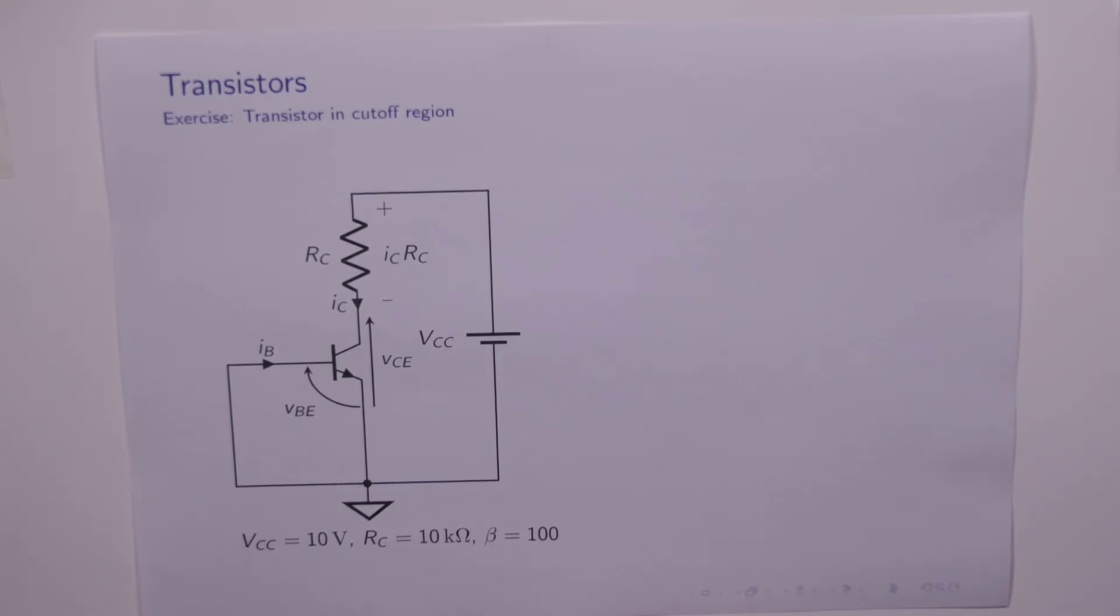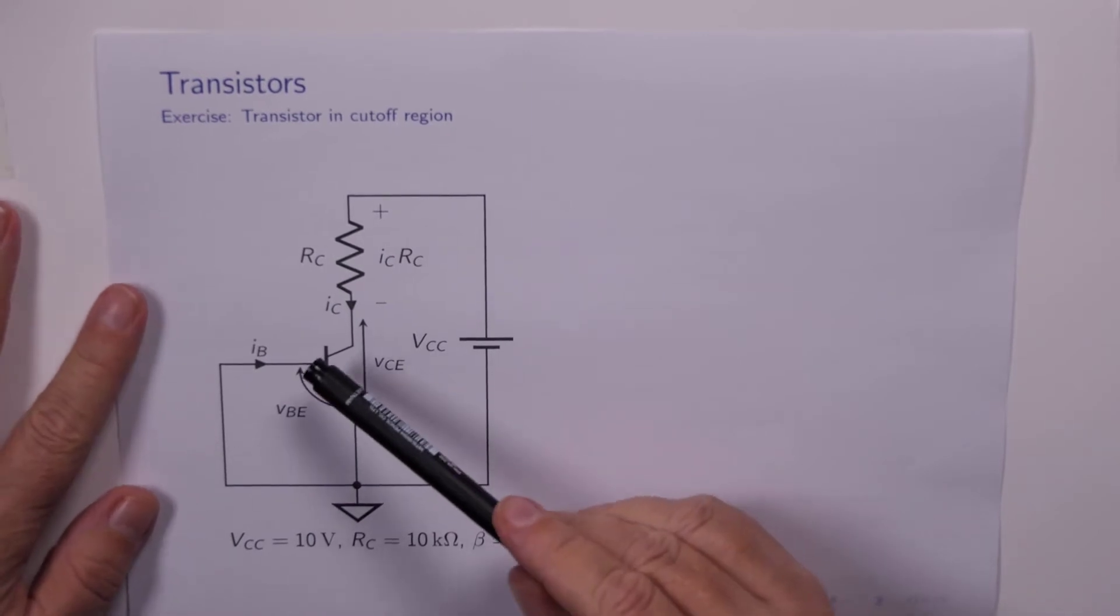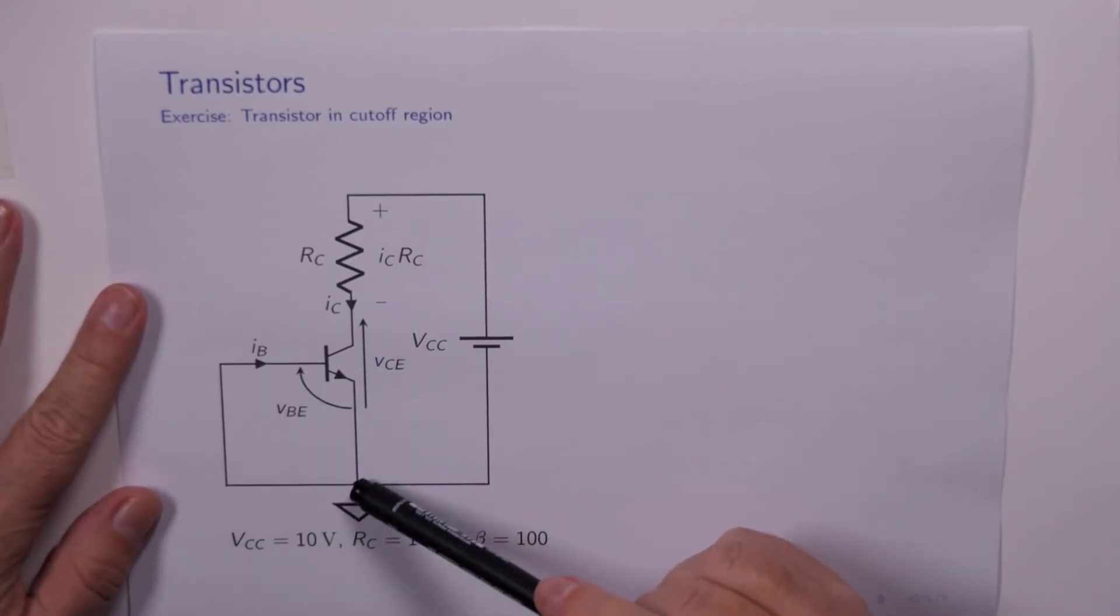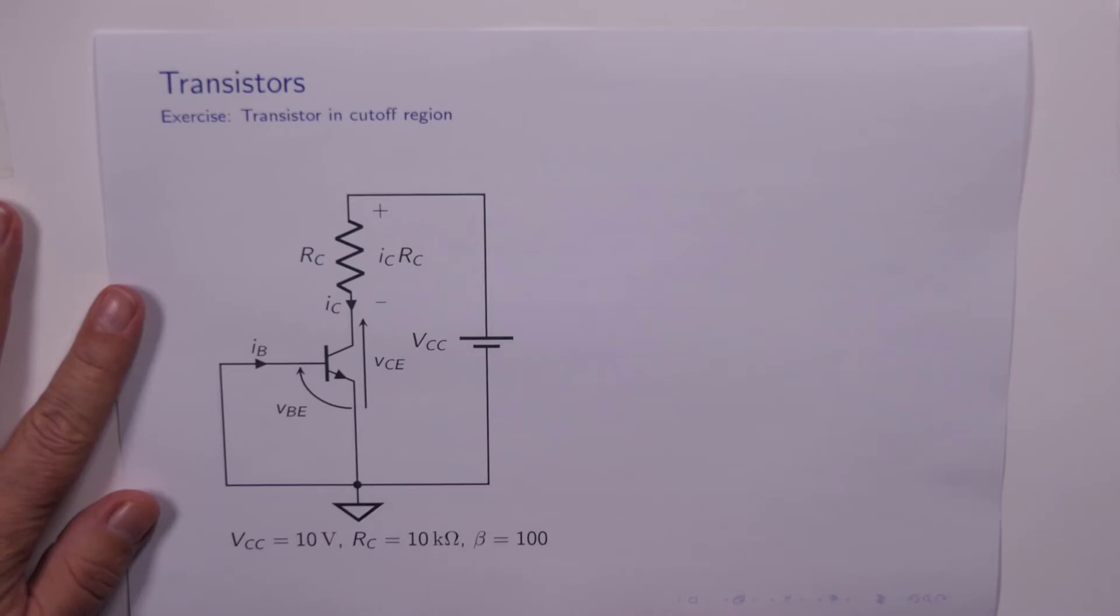Now hopefully you can see that this means the transistor must be in cutoff. Why? Because VBE is 0. The base is connected to ground, the emitter is connected to ground,